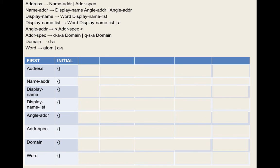For name-address, we look at its two production rules. We take the first set of display-name, subtract epsilon, add it to name-address — display-name is empty. Do we go on to angle-address by rule four? No, because there's no epsilon in display-name's first set. Then we add the first set of angle-address to name-address — it's empty too.